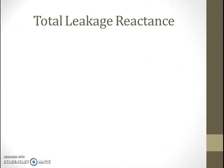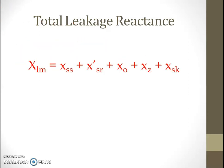So now ultimately we can give an equation for total leakage reactance. Total leakage reactance X_lm is the summation of all the leakage reactances calculated so far: X_ss (stator slot leakage reactance) plus X'_sr (rotor slot leakage reactance referred to stator) plus X_o (overhang leakage reactance) plus X_zz (zigzag leakage reactance) plus X_sk (skew leakage reactance).